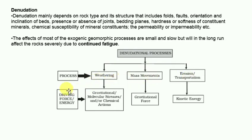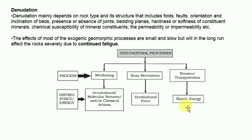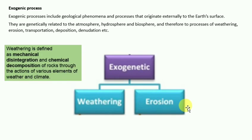The three processes of denudation are: weathering, mass movement, and erosion and transport. In weathering, the driving force is gravitational, molecular stress, or chemical action. In mass movement, the driving force is gravitational forces. In erosion and transportation, the driving force is kinetic energy. Weathering is defined as mechanical disintegration and chemical decomposition of rock through the action of various elements of weather and climate.